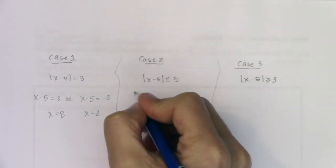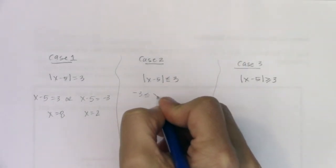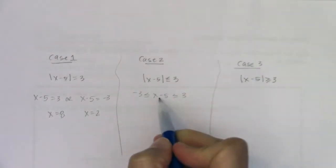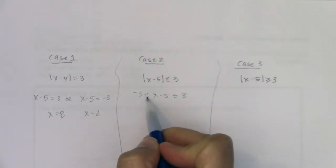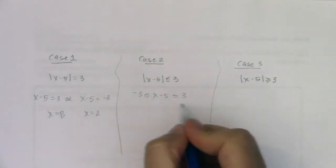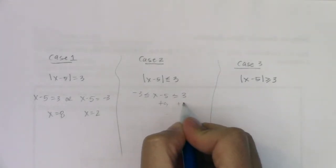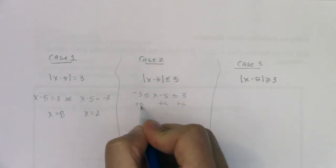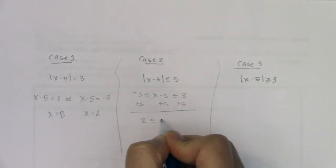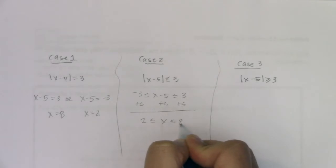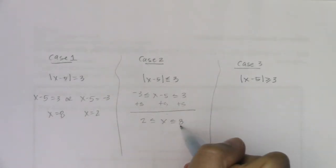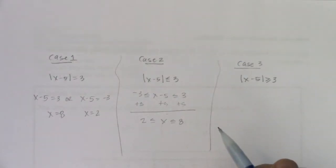For case two, that's when you make the three-part inequality. We had negative three less than or equal to x minus five less than or equal to three. Then I would add five to all sides — left, middle, and right — and I get two less than or equal to x less than or equal to eight, because any number between two and eight is less than three units away from five.